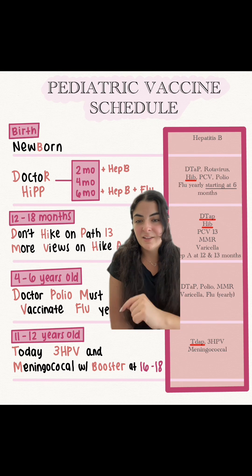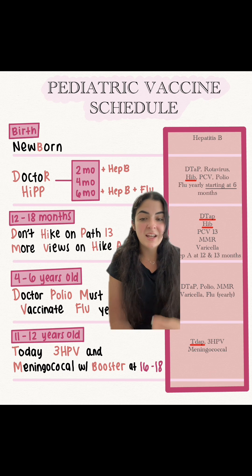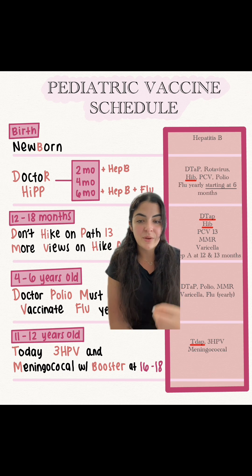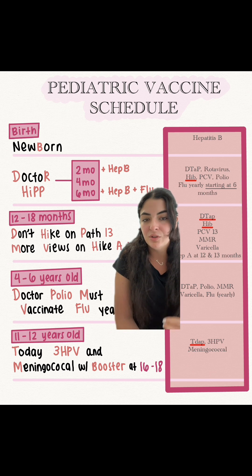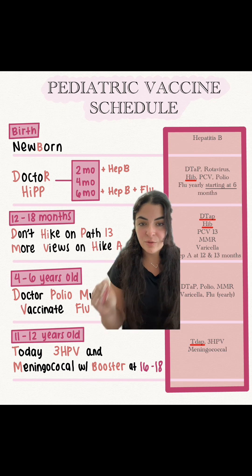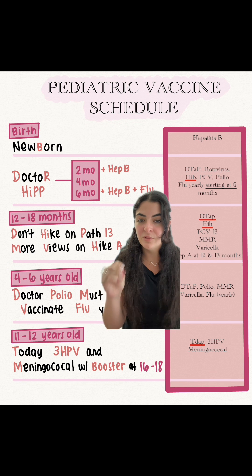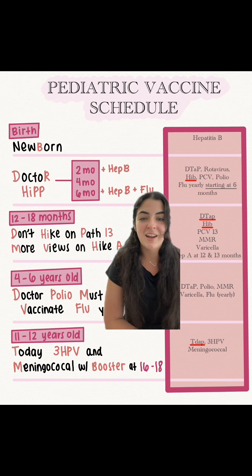Last group: our 11 to 12 year olds. We give HPV and meningococcal, with a booster at 16 to 18. So we give the initial meningococcal dose at 11 to 12 years old, and then when we boot them out the door for college, they get a booster.